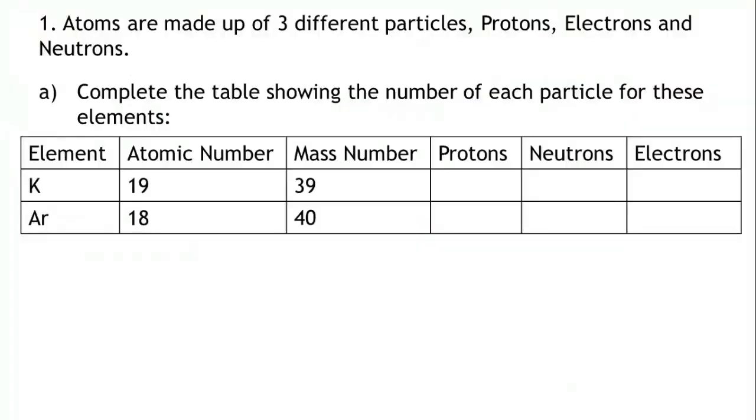Question 1. Atoms are made up of three different particles: protons, electrons, and neutrons. Part A: Complete the table showing the number of each particle for these elements.